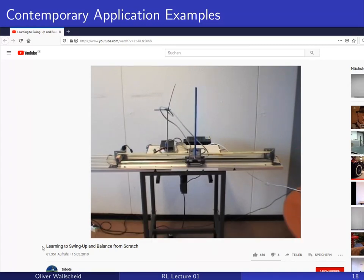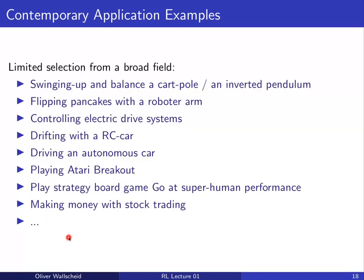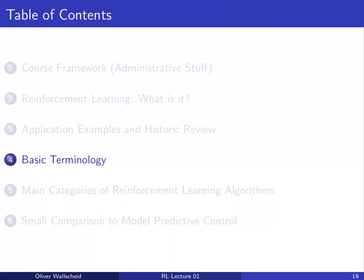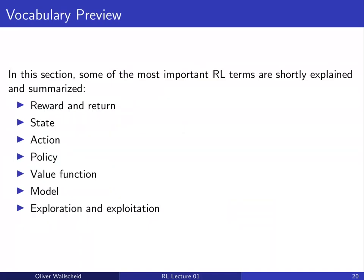The cart-pole is a very classical application example. Going through the other linked examples shows that reinforcement learning is a very general approach for solving optimization and decision-making problems across a broad range: classical engineering, robotics, automotive, computer games, and stock trading. In the next section we discuss the basic vocabulary of RL: reward and returns, state, action, policy, value functions, model, and the exploration-exploitation dilemma.